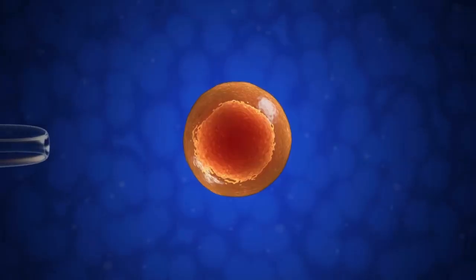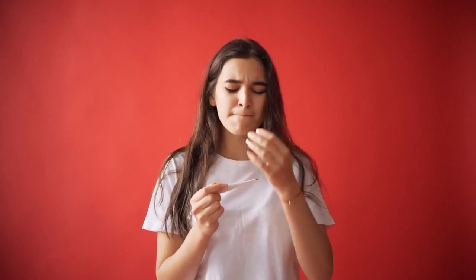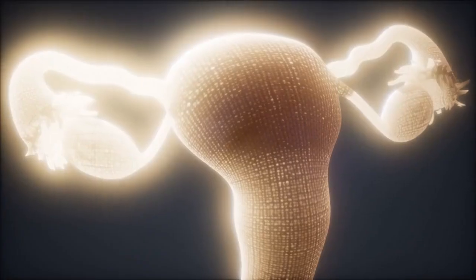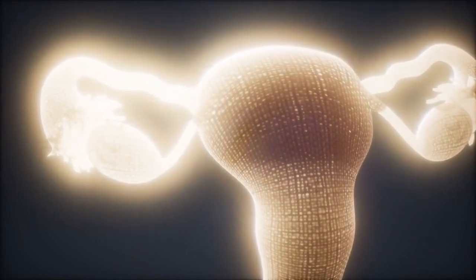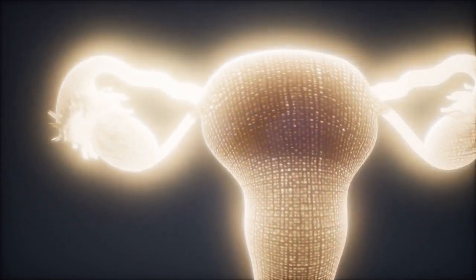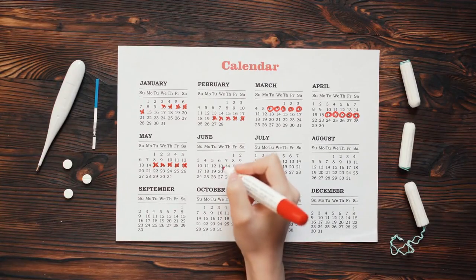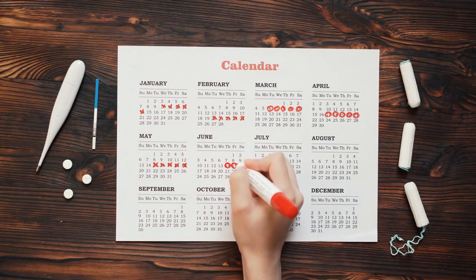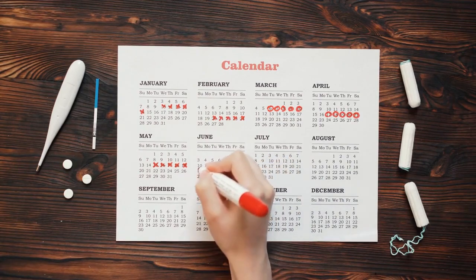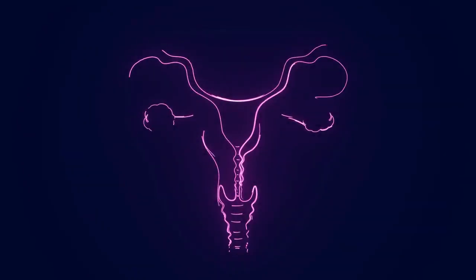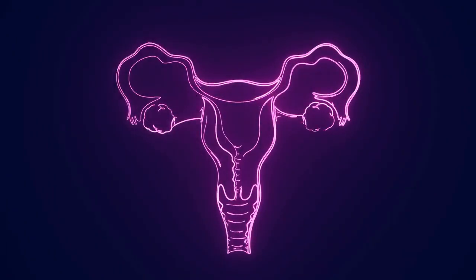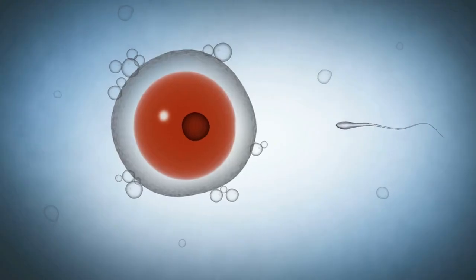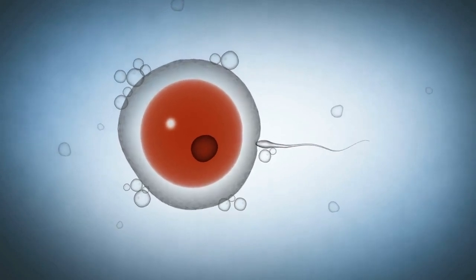The pituitary gland produces follicle-stimulating hormone, FSH, during the first part of the menstrual cycle. The ovaries are stimulated by this hormone to produce mature eggs inside cavities filled with fluid, referred to as follicles. As these follicles grow, estrogen production increases. On the first day of the menstrual cycle, estrogen levels are at their lowest and progressively rise as the follicles develop. Even while several follicles initially form, usually only one becomes the dominant follicle, while the others recede — this dominant follicle harbors the maturing egg.